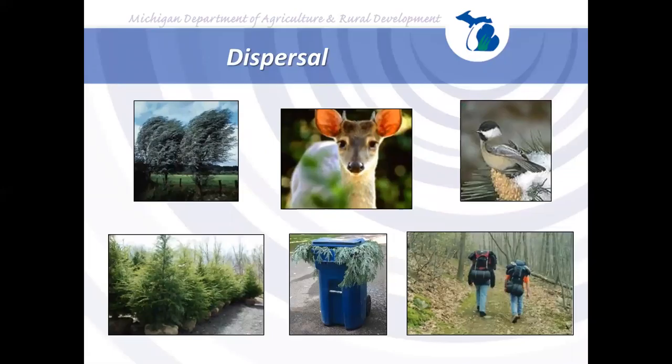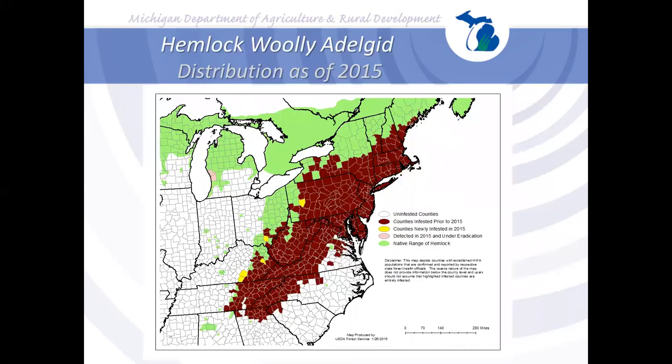HWA is a very small insect that can spread in multiple ways: wind dispersal over fair distances, movement on the fur of mammals such as squirrels and deer, transport by birds on feathers or feet, movement on human gear, clothing, equipment, and vehicles, disposal of infested yard waste, and—the primary pathway into Michigan—movement on infested nursery stock. Because no mating is required, a single individual can start a new infestation.